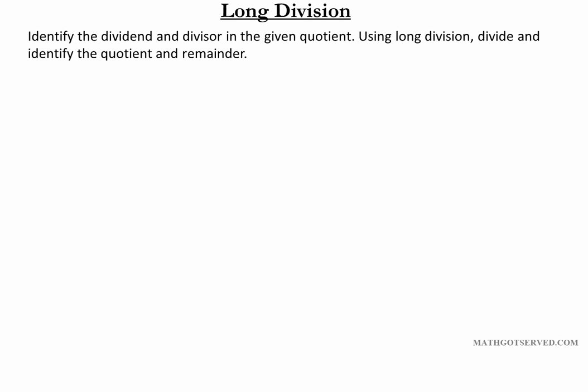The instructions for this example are as follows. We are to identify the dividend and divisor in the given quotient, and using long division we have to divide, then identify the quotient and remainder. The problem we're going over is x to the fourth minus 81x squared minus 9x minus 81 divided by x plus 9.